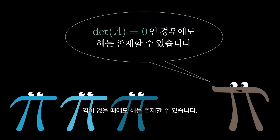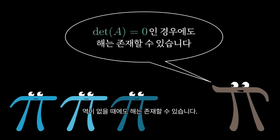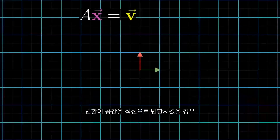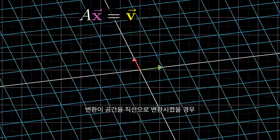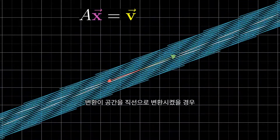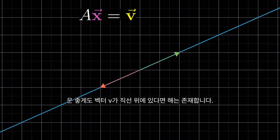It's still possible that a solution exists even when there is no inverse. It's just that when your transformation squishes space onto, say, a line, you have to be lucky enough that the vector v lives somewhere on that line.